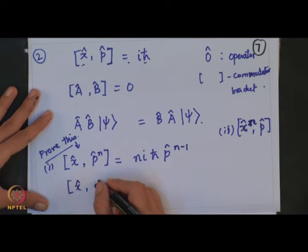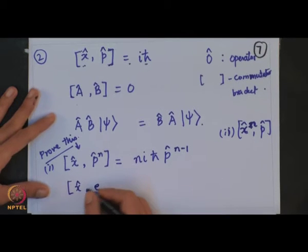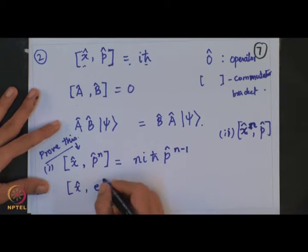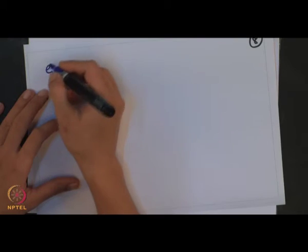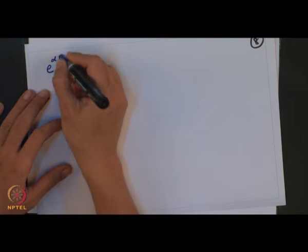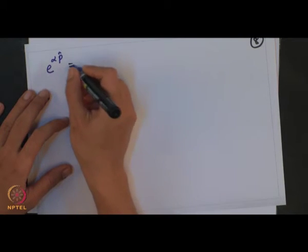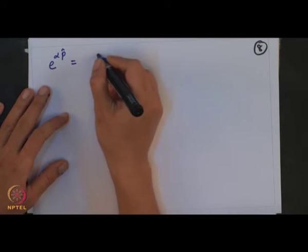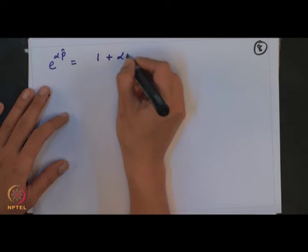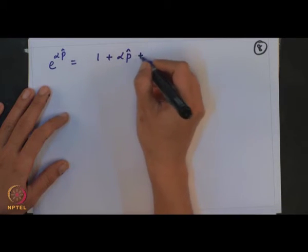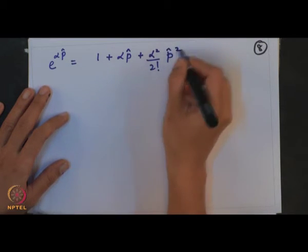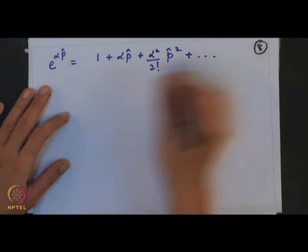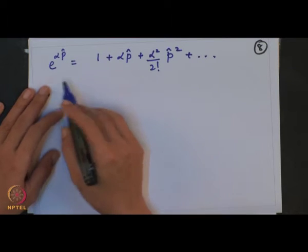Let us evaluate the commutator bracket [x̂, e^(αp̂)]. I can write e^(αp̂) as 1 + αp̂ + (α²/2!)p̂² and so on — you can write the exponential series.